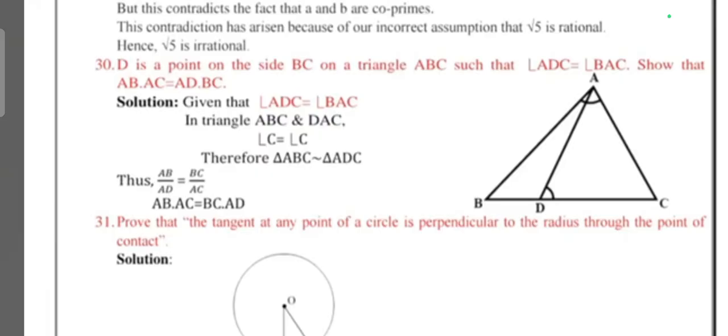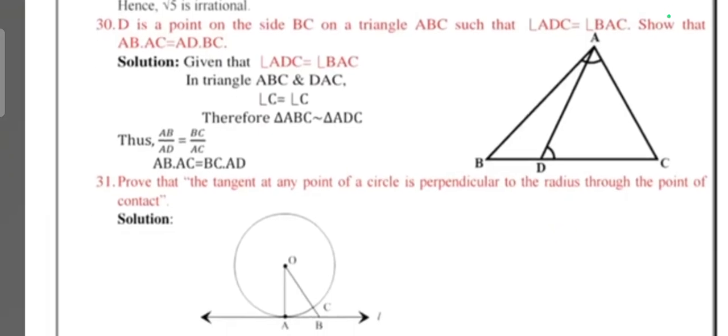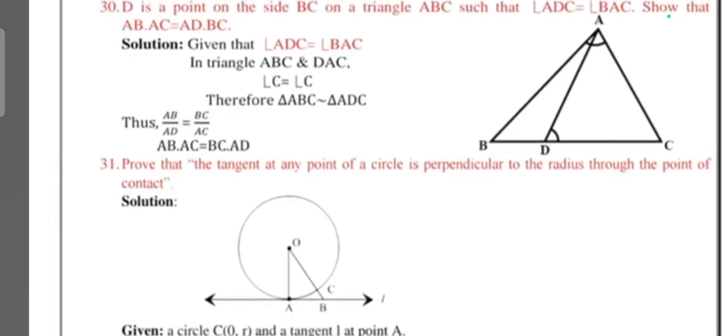Question 30: D is the point on the side BC of triangle ABC such that angle ADC is equal to angle BAC. Show that AB × AC = AD × BC. Next one, question 31, tangent theorem: Prove that the tangent at any point of a circle is perpendicular to the radius through the point of contact.